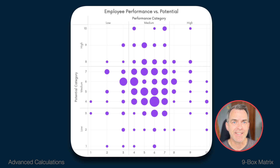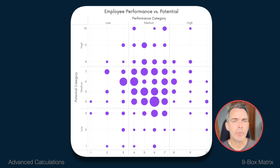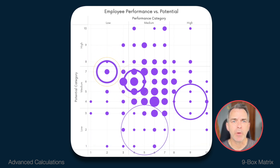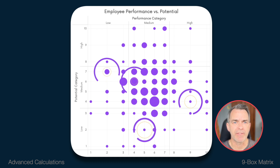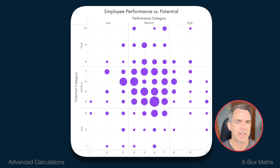Performance is plotted horizontally and potential is plotted vertically. From there, we plot each employee onto the graph, then summarize the number of employees that fall within each box. Let's see how we build it.